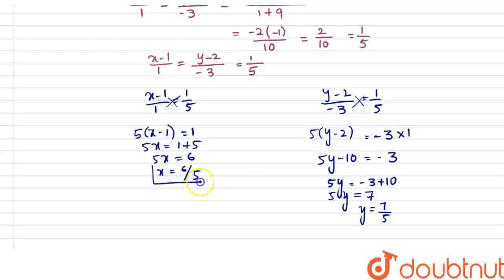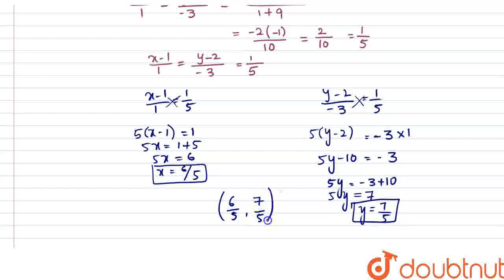Therefore, the image of the point (1, 2) with respect to the line x minus 3y plus 4 equal to 0 is (x, y) equal to (6 by 5, 7 by 5). That is our answer. Thank you.